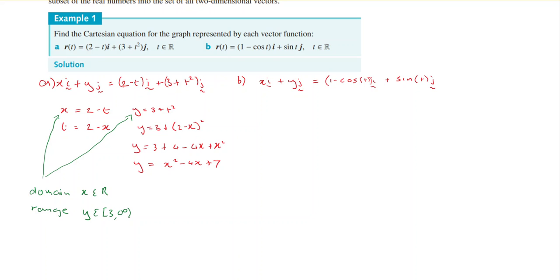Equate the coefficients. For x, you get x is equal to 1 minus cos t. And for y, you get y is equal to sine t.